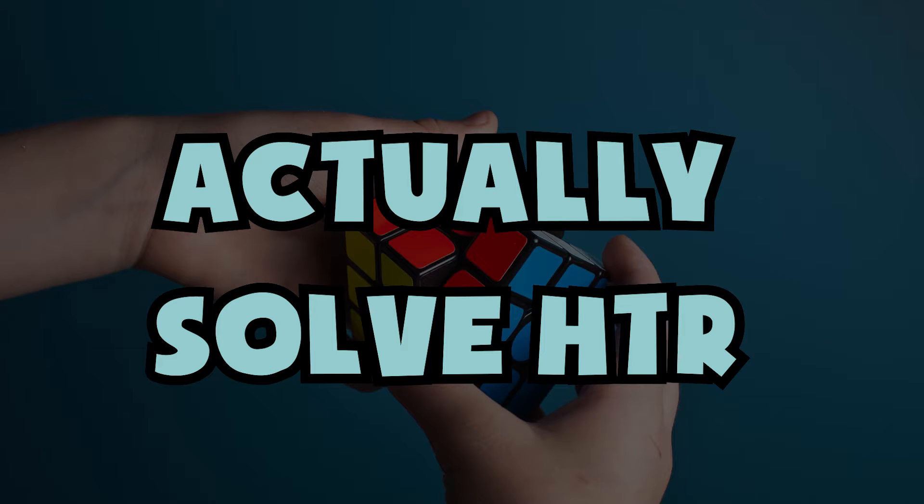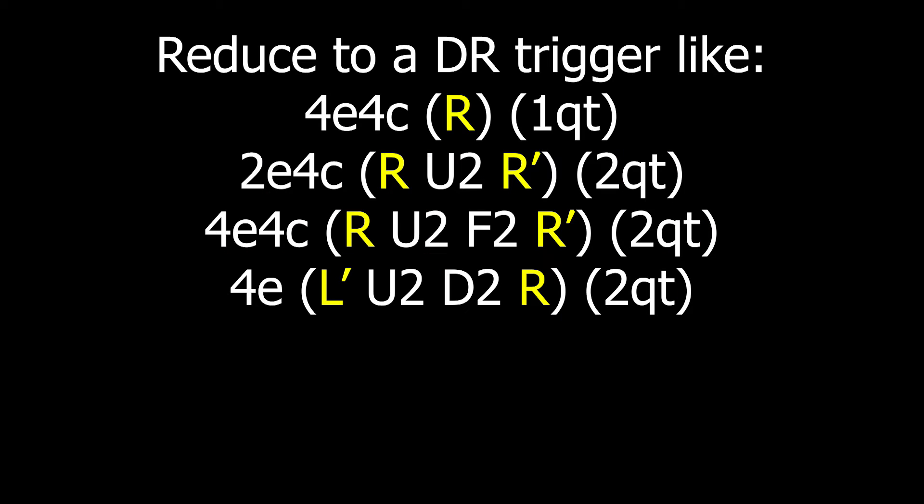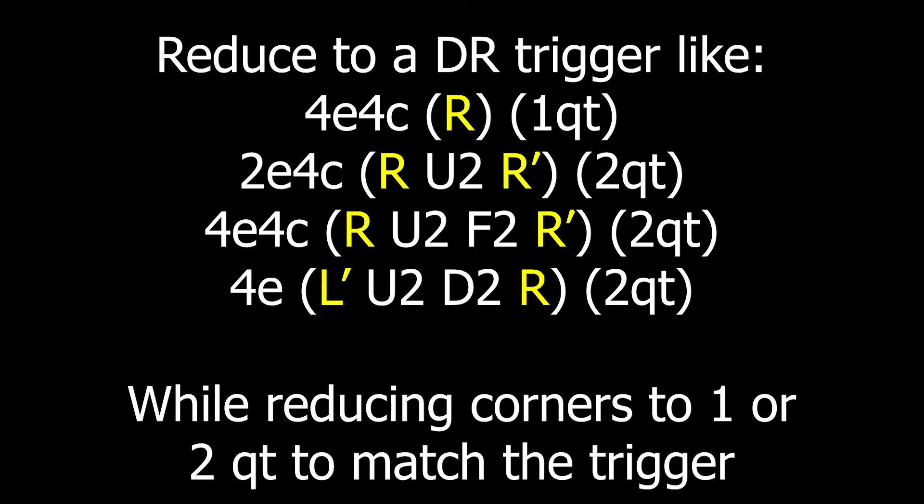So how do you actually solve HTR? Well, you essentially want to reduce the cube to a trigger while reducing the number of quarter turns left in corners so they match.